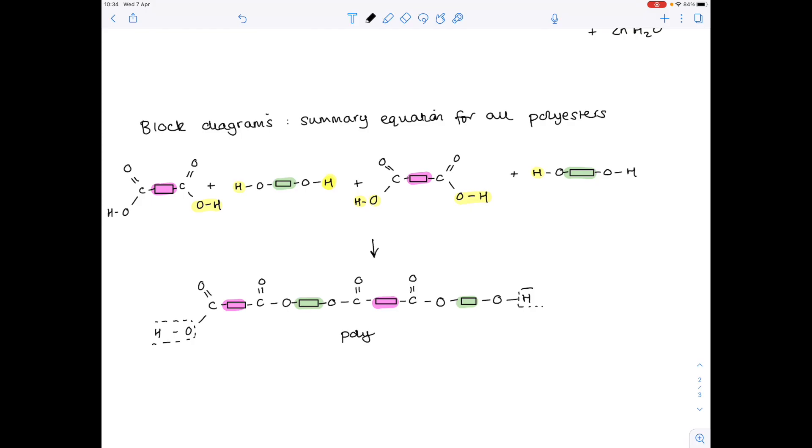And so here's our polyester. We know we've lost 3 water molecules. Because you can count them here: 1, 2, 3. If they ask you for the ester bond, remember that's the COO that you see. So that's the functional group of an ester.